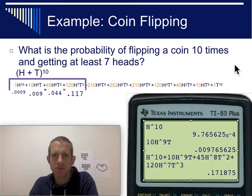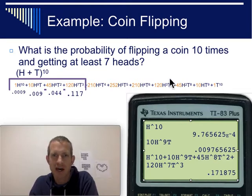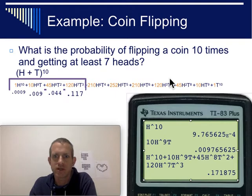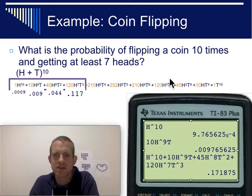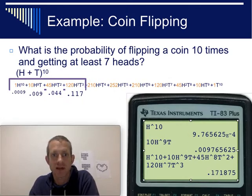It's kind of cool when we do this in the classroom to compare the theoretical probability of 17 percent with what we actually got. Some years we get a little bit better than 17 percent, sometimes a little bit less, but overall it's pretty close to 17 percent, which is again kind of cool.